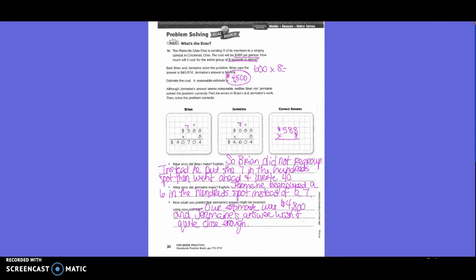Then they want to estimate the correct answer. So we wrote 588 times 8. So you guys said 8 times 8 is what? 64. So we're going to put a 4 and carry the 6. So then 8 times 8 is 64, plus 6 is 70. So we put a 0 in the tens spot and carry a 7 to the hundreds spot. 8 times 5 is 40, plus 7 is 47. So they actually spent $4,704.